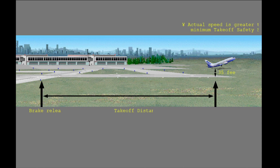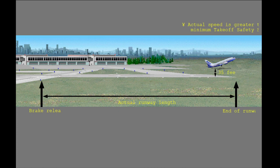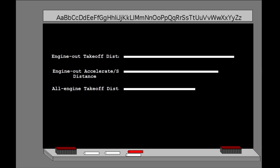The third field length requirement addresses the all-engines-operating takeoff. The takeoff distance is measured from brake release to the point where the airplane is 35 feet above the runway. For the all-engine takeoff, the airplane speed at this point will be greater than the minimum safe flying speed V2. The requirement states that the available runway must be at least 15% greater than the all-engine takeoff distance. The field-length-limited takeoff gross weight is the most restrictive of the engine-out accelerate-stop distance limited weight, the engine-out takeoff distance limited weight, and the all-engine takeoff distance limited weight.